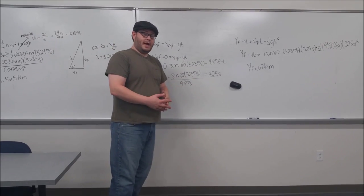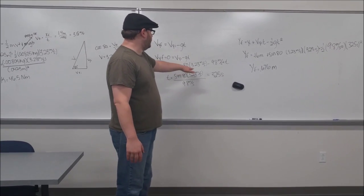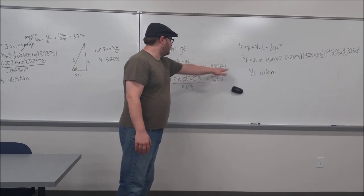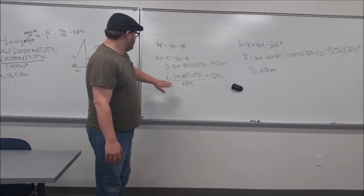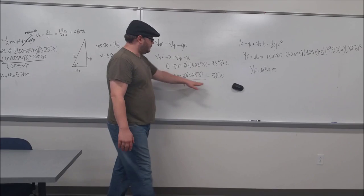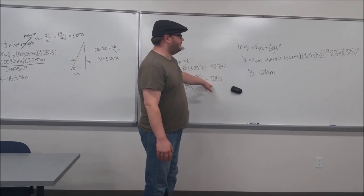Using the sine of 80 degrees, which is the degree of our catapult launch multiplied by the appropriate quantities, we solve for t and yield a value of 0.325 seconds.